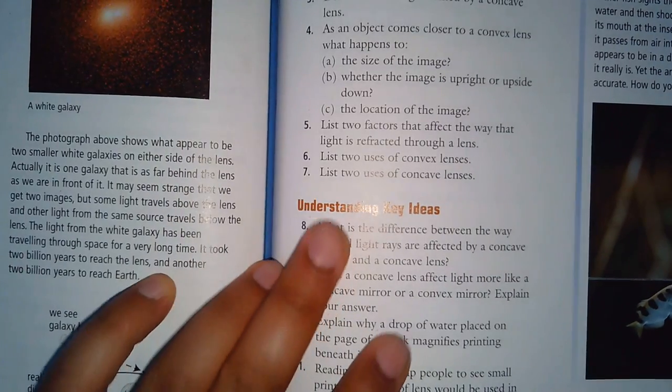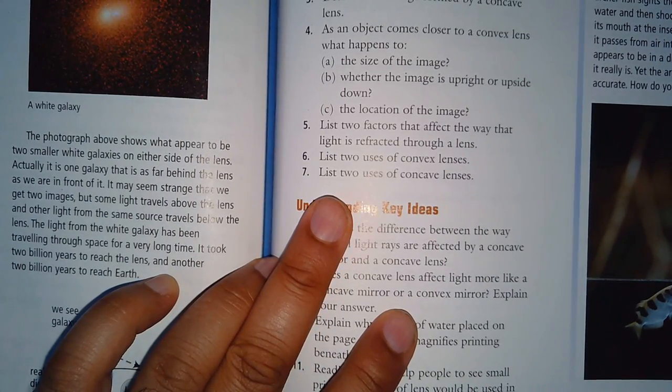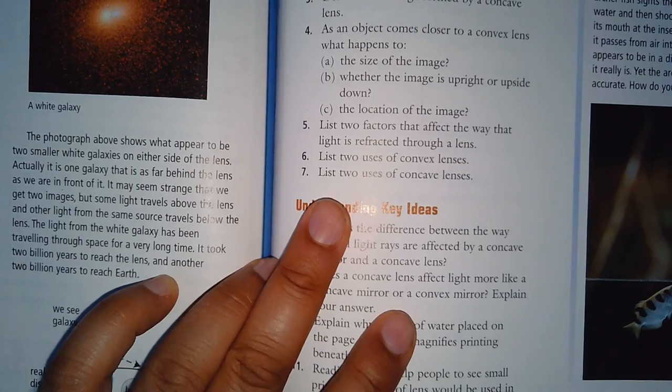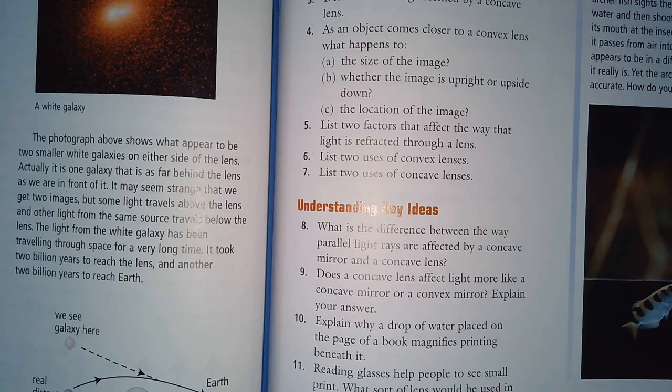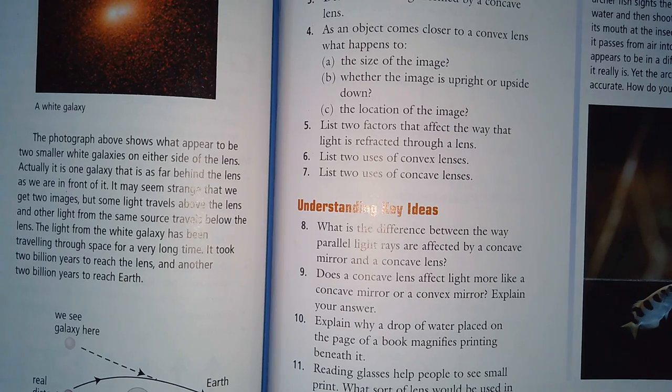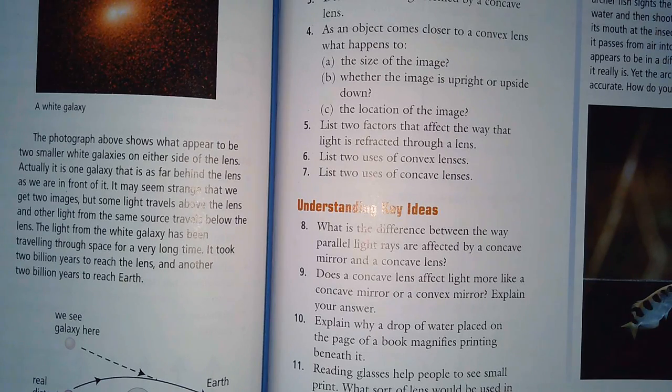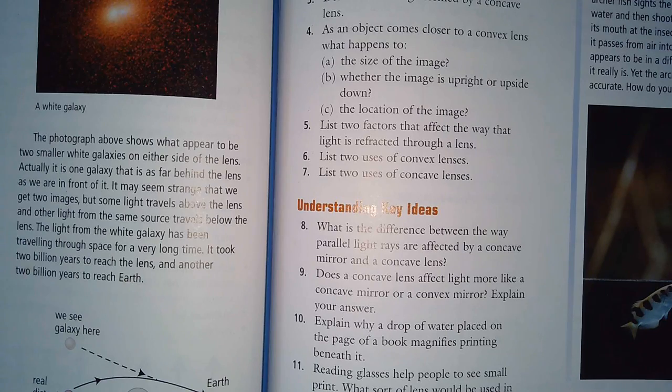Two factors that affect the way light is refracted through a lens. It's the thickness of the lens, the level of curvature of the lens, and the material that the lens is made up of. Those are three factors that affect how much refraction you're going to get.